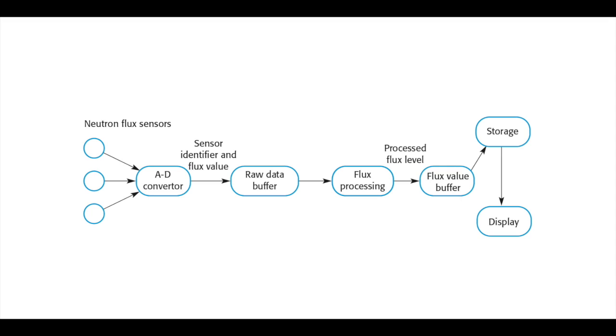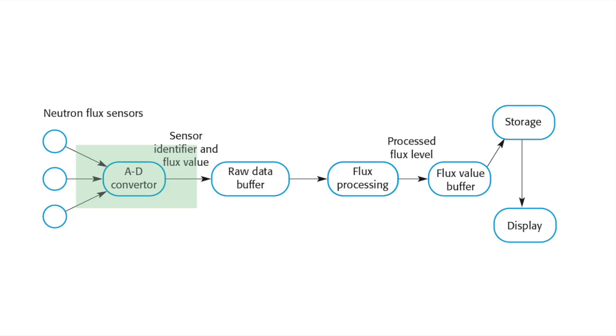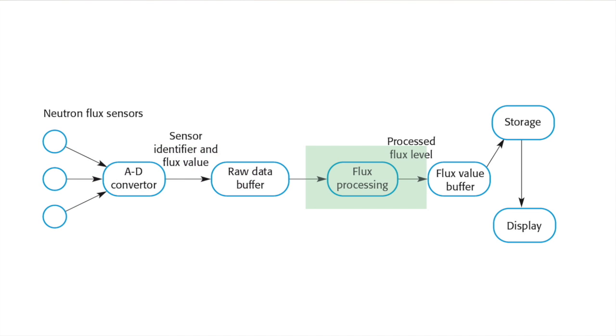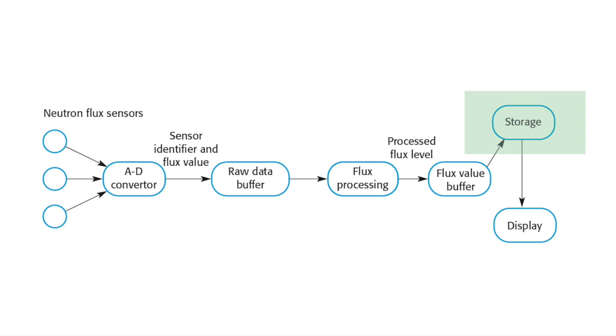Here's an example of the process pipeline monitoring the neutron flux in a nuclear reactor. Neutron flux is a measure of how quickly the reaction is proceeding, controlled using control rods that increase or slow down the flux. The sensors are analogue sensors, so the producer process is an ADC converter that collects digital signals. These are passed to a raw data buffer. A further processing step analyses the raw data and places it in another buffer — the flux value buffer — which changes the representation of the raw data. The data is then further processed and stored for later analysis.